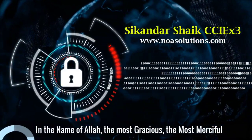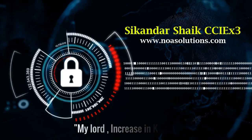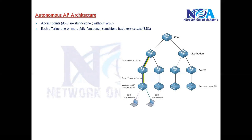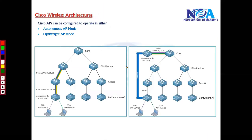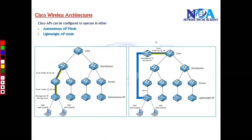Bismillah. The next thing we'll try to understand in a little more detail is the autonomous access point architecture. In the previous session I gave an overview of the difference between these two modes. In autonomous access point mode there is no WLC used, but if you go with lightweight access point mode you have a centralized WLC — a controller used to manage the access points.